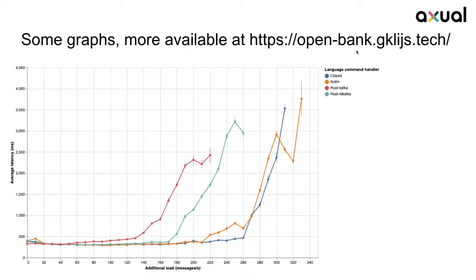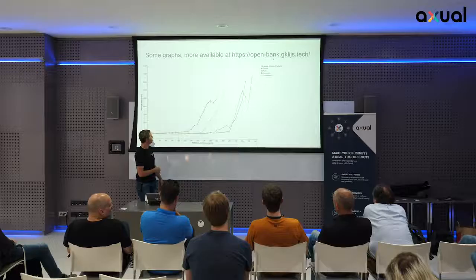This chart shows the average latency — from doing a transaction to detecting it on screen. You can see the red line for the native Rust quickly going up because it can't keep up: it has to send an acknowledgment back for everything that's produced.